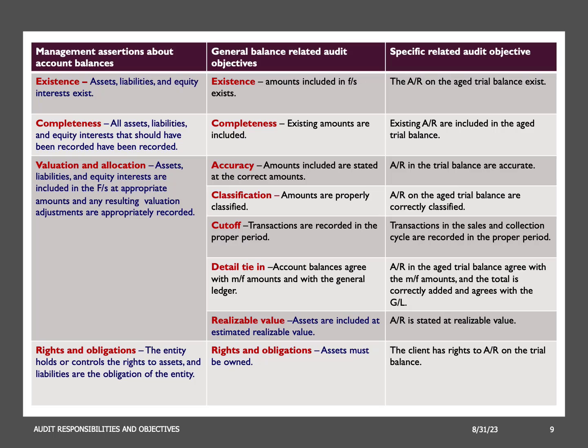Completeness ensures that all relevant transactions, events, and information have been included in the financial statements, asserting that there are no significant omissions and all material items have been accurately recorded. The auditor's objective is to gather audit evidence that all important transactions and events have been properly recorded, which is crucial to avoid underreporting and a distorted view of the company's financial position. For example, for a company's accounts receivable account, the completeness assertion involves ensuring that all outstanding customer debts have been accurately recorded in the accounts receivable balance.